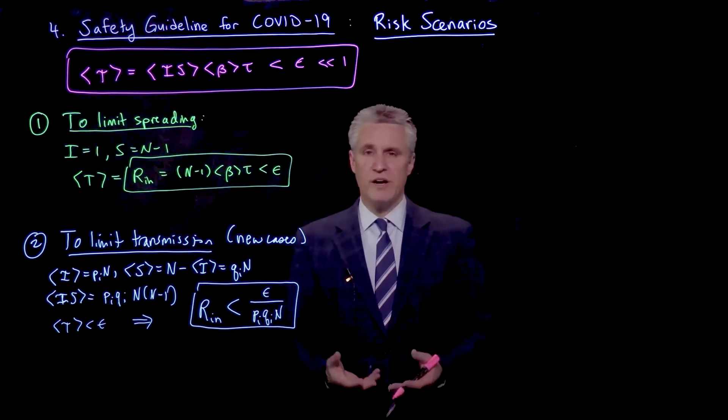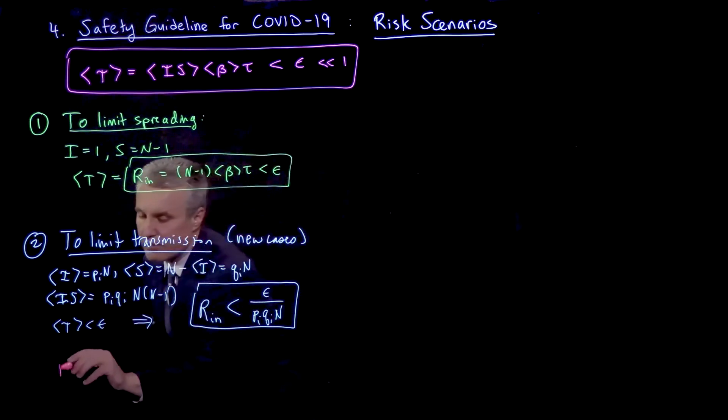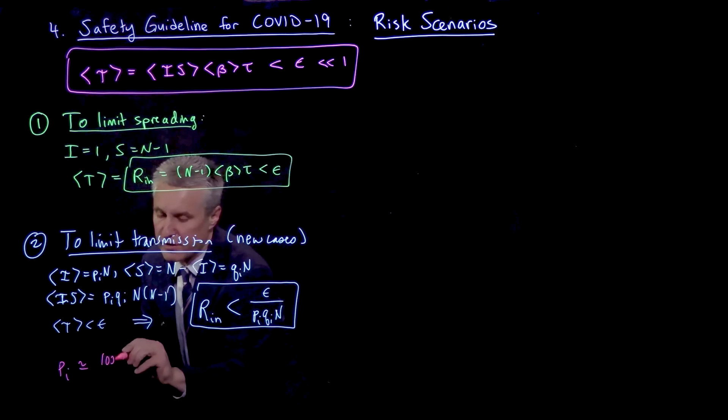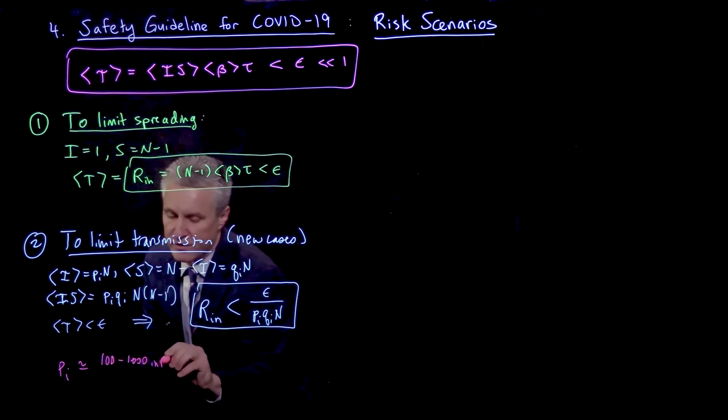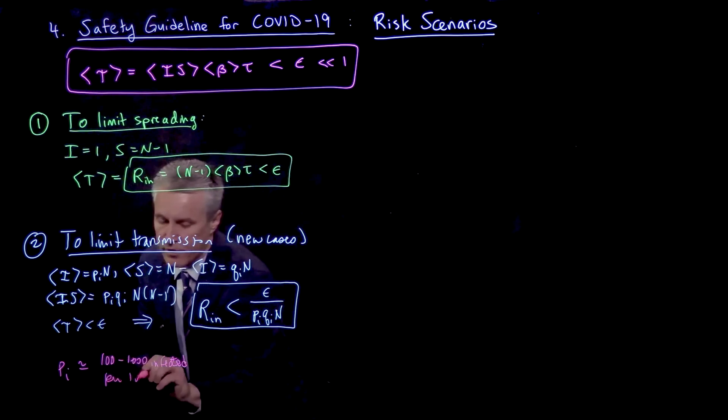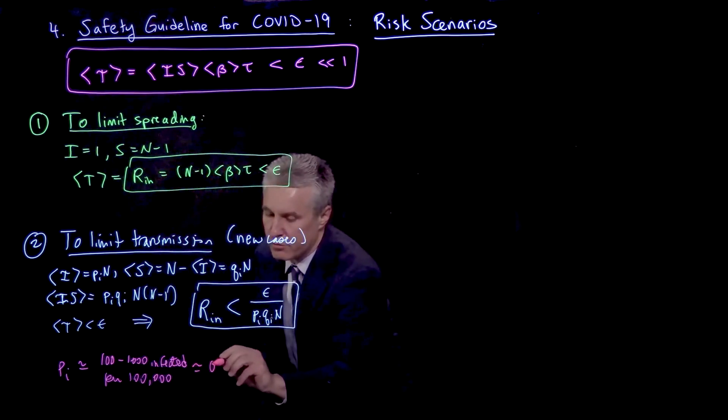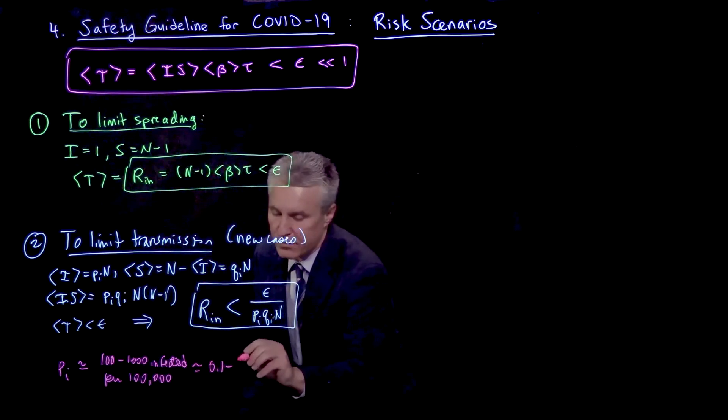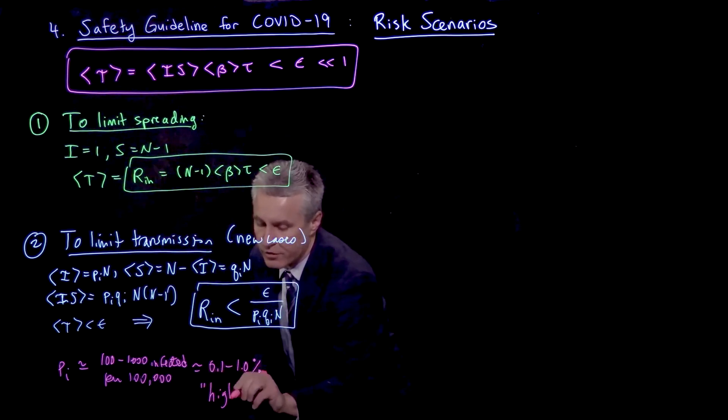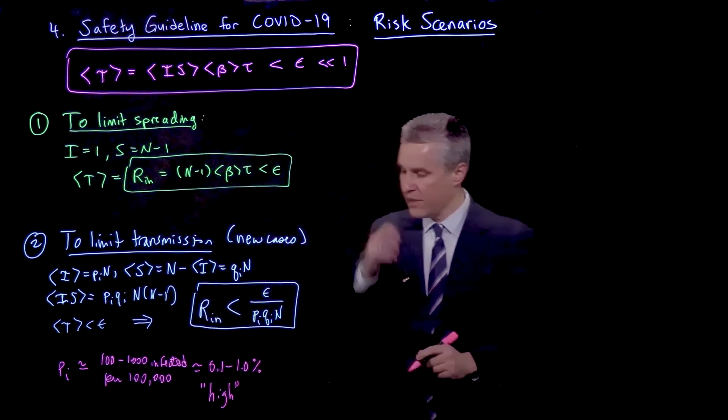It's typically considered to be a high prevalence infection when we're getting in the range of maybe 100 to 1,000 infected per 100,000 people in the population. So that would be 0.1% to 1.0%. This is really considered usually quite high prevalence, actually, so there's quite a few infected people around.